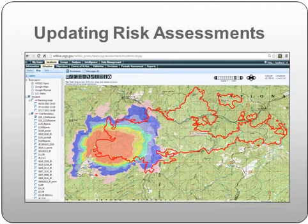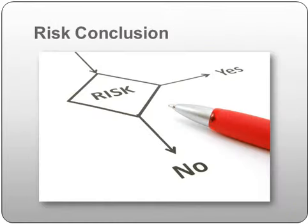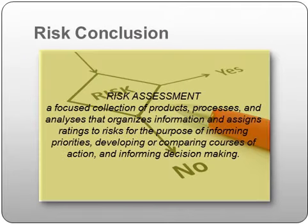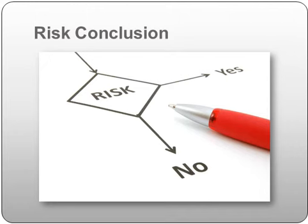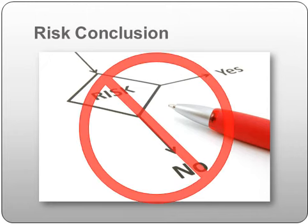For example, a 14-day FS Pro run completed on August 1st is no longer valid after August 14th, and maybe it assumes a killing frost has not occurred. Remember, at the beginning of this lesson we defined risk assessment as a focused collection of products, processes, and analyses that organizes information and assigns ratings — be they relative, qualitative, or quantitative — to risks for the purpose of informing priorities, developing or comparing courses of action, and informing decision making. Consistency between the extended risk assessment and the relative risk assessment will result in a qualitative rating for overall risk. However, these risk assessments do not determine the course of action, nor do they result in a go-no-go decision for a course of action.